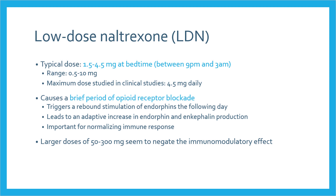LDN works by causing a brief period of opioid receptor blockade. This triggers a rebound stimulation of endorphins the following day, which leads to an adaptive increase in both endorphin and enkephalin production. An increase in endorphins has been shown to be important for normalizing the immune response. This effect, however, appears to be dose dependent and has not been seen with higher doses of 50 to 300 milligrams.